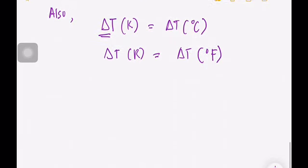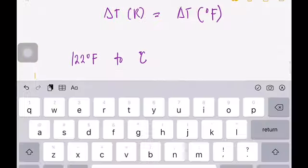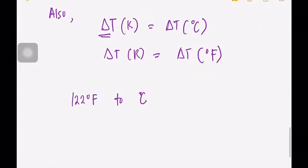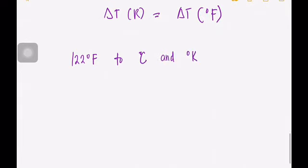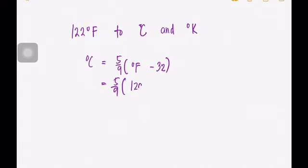For example, convert 122 degrees Fahrenheit to degrees Celsius and to Kelvin. Using the basic formula, degree Celsius equals five-ninths of the given Fahrenheit minus 32. So that is five-ninths times (122 minus 32), which gives us 50 degrees Celsius.